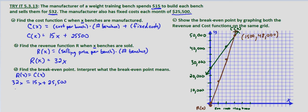If we subtract 15X from both sides, we get 17X equals 25,500. And dividing both sides by 17, we get 25,500 divided by 17, which equals 1,500.